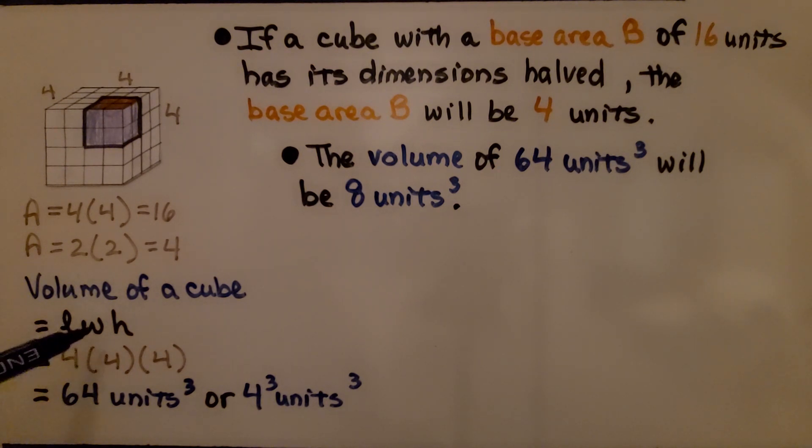The volume goes from 64 units cubed down to 8 units cubed. The volume of the cube is length × width × height. We had 4 × 4 × 4 = 64. Now we have 2 × 2 × 2 = 8. So if we double dimensions, the volume will not double. And if we cut the dimensions in half, it will not cut the volume in half. I hope that makes sense.